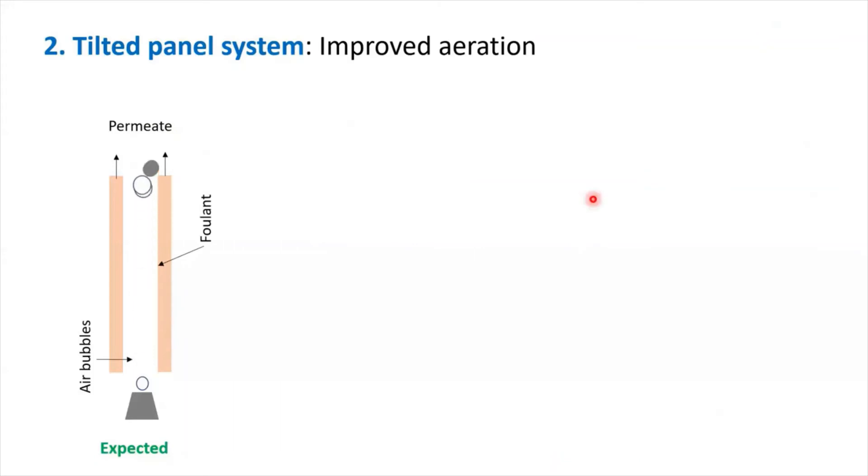So we come up with a different approach we call a tilted panel system. When we perform aeration, this is what we think actually happens. We pump the air bubbles, and the air bubbles will scour off the membrane fouling like this. This is the dream of a researcher, the dream of engineers to clean the membrane. But in reality, it's not that easy. Because the bubble is very hard to control, it's just only sometimes hits the membrane surface and performs the cleaning. So it is not efficient.